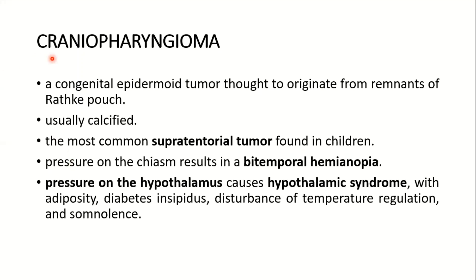The next disease is craniopharyngioma — a congenital epidermal tumor thought to originate from remnants of Rathke's pouch, usually calcified. It is the most common supratentorial tumor found in children, and pressure on the chiasm results in bitemporal hemianopia. Involvement of the hypothalamus causes hypothalamic syndrome.